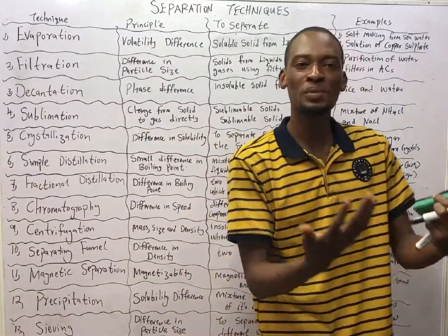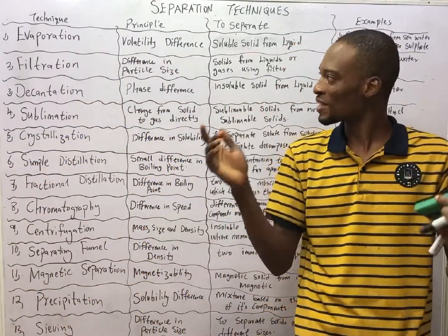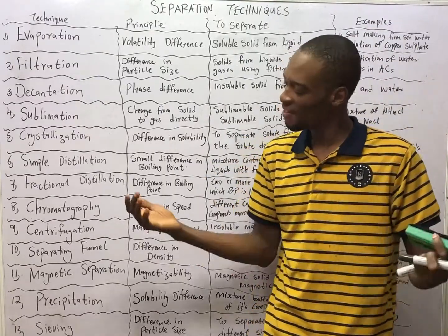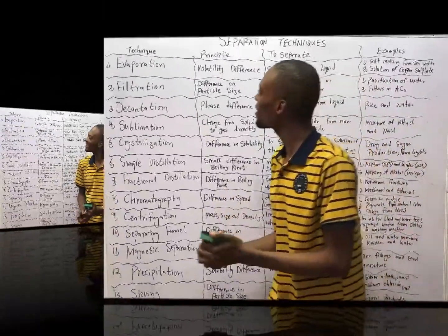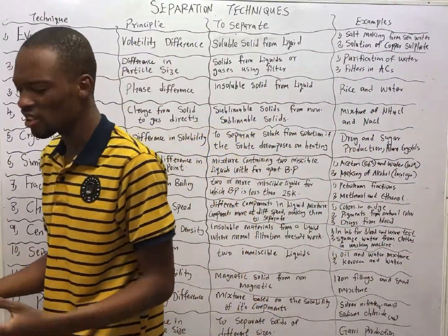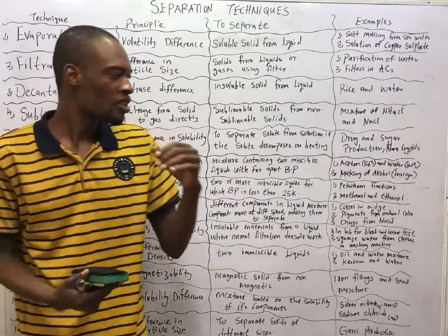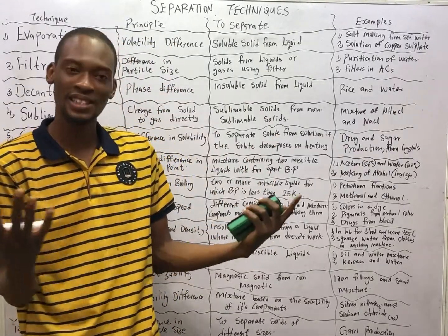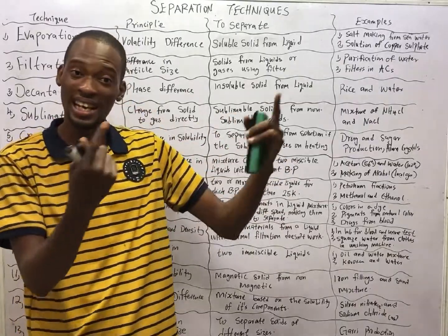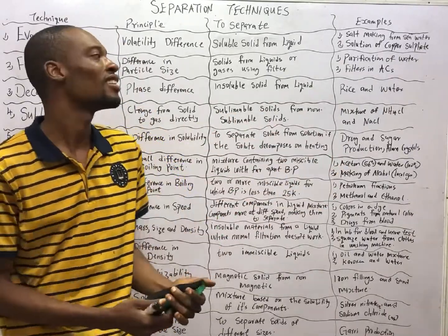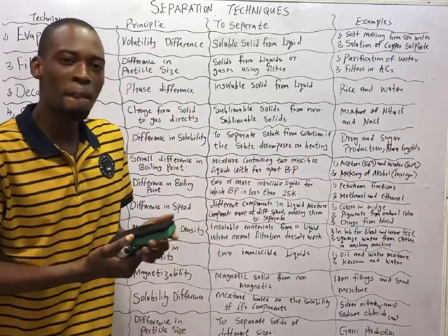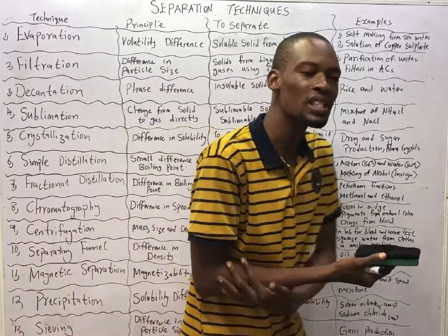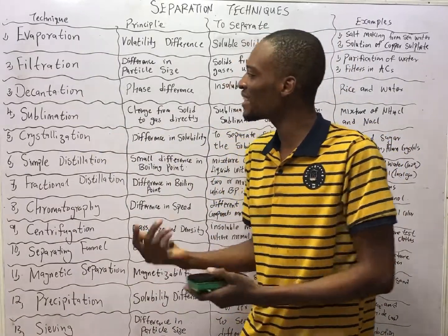What are they and which mixtures are they used to separate? Let us begin. In my video on change of states, I told you that matter can exist in different states: solid, liquid, and gas. And matter can change from one state to another. When matter changes from liquid to solid, we say that is freezing. And when it changes from solid back to liquid, we say the solid has melted.